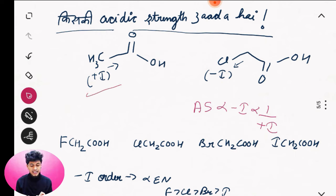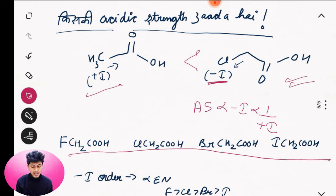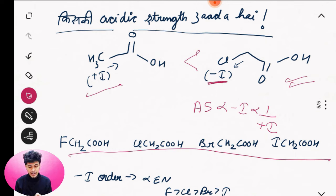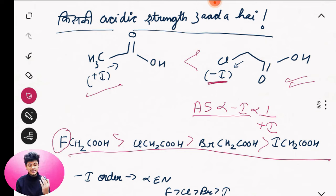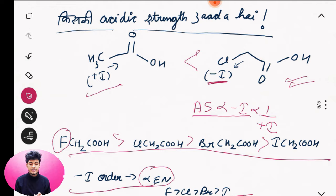Basically, when Minus-I is more, the acidic strength is greater. The order of Minus-I effect for halogens — which is not affected by other factors — is: Fluorine greater than Cl greater than Br greater than I. So Fluorine is the strongest, meaning the acid strength order follows the order of electronegativity: F greater than Cl greater than Br greater than I.